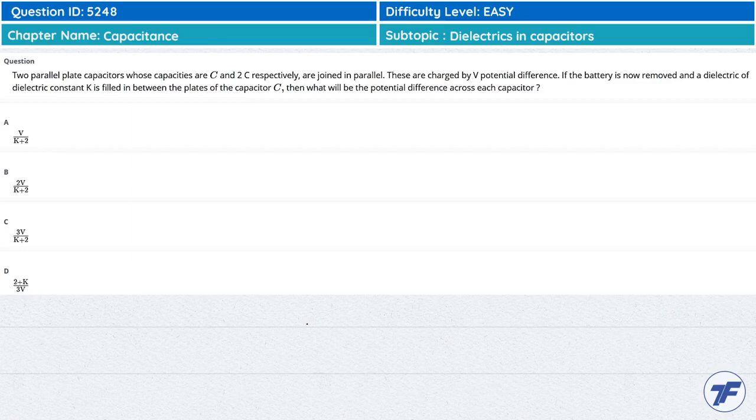Two parallel plate capacitors whose capacitances are C and 2C respectively are joined in parallel. These are charged by potential difference V. If the battery is now removed and a dielectric of dielectric constant K is filled in between the plates of capacitor C, then what will be the potential difference across each capacitor?